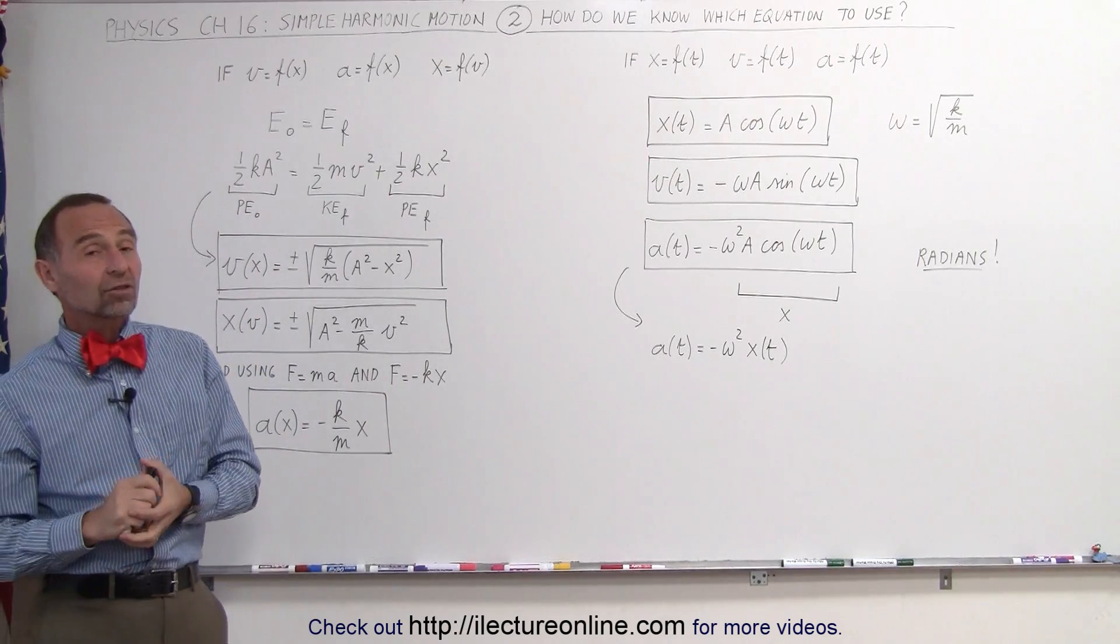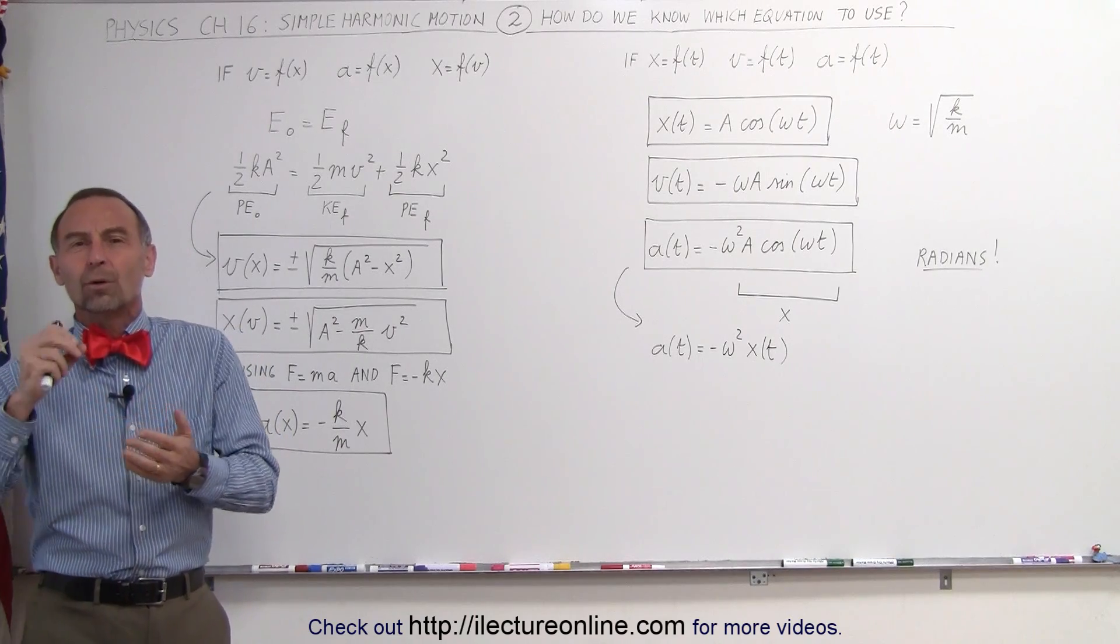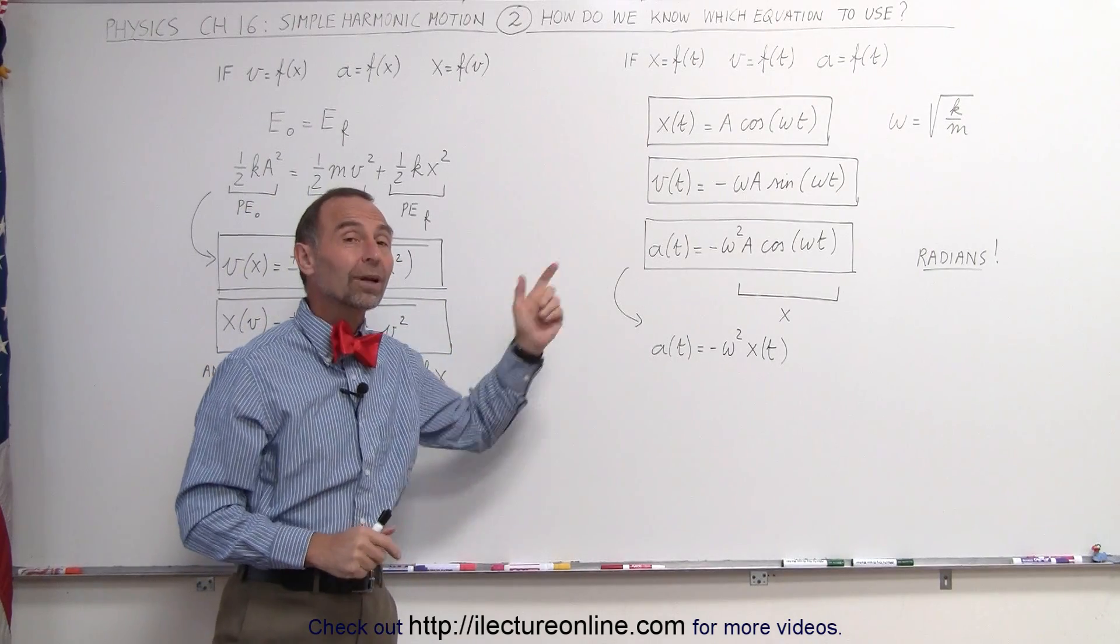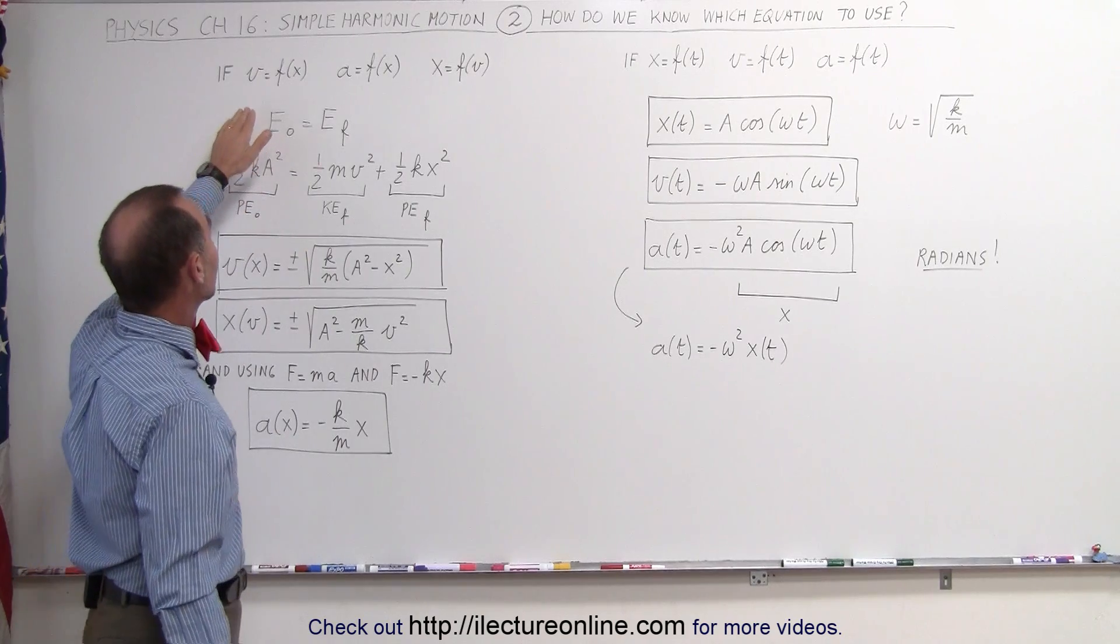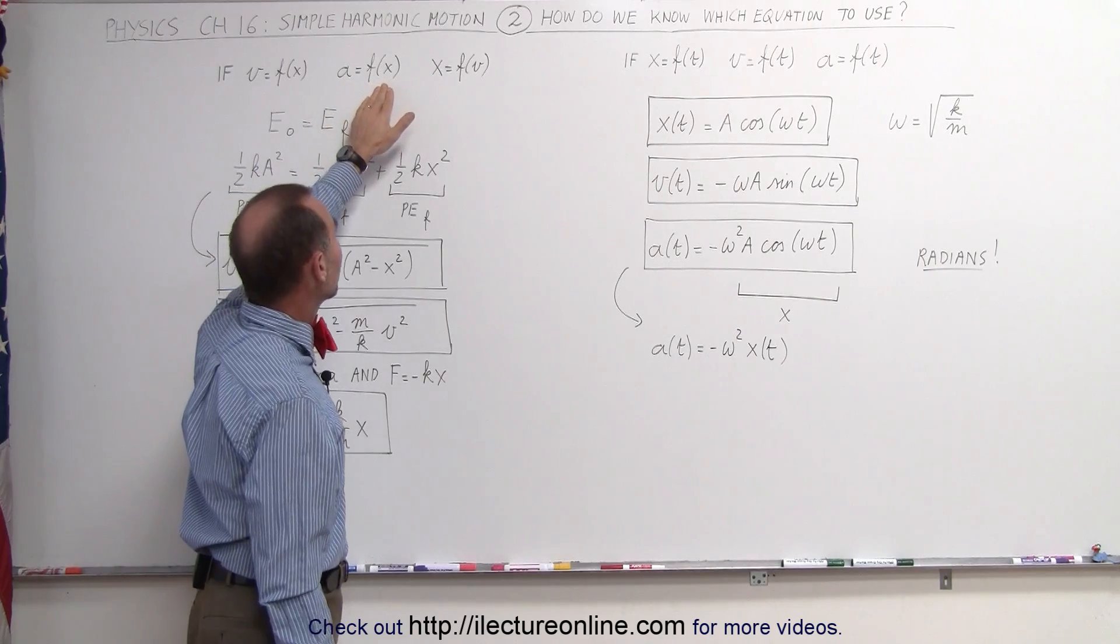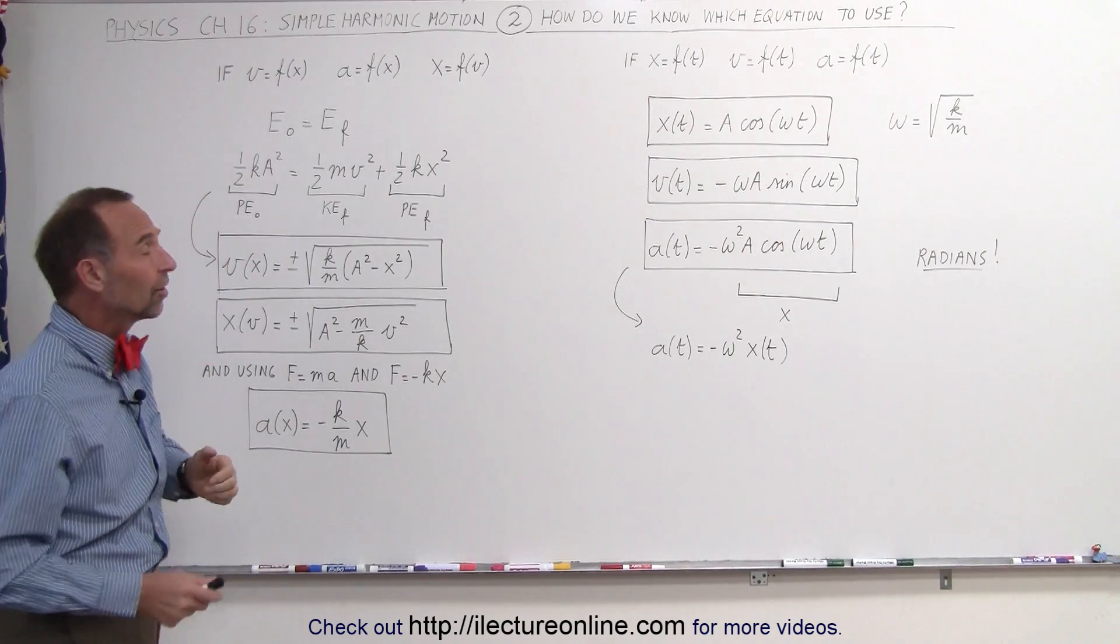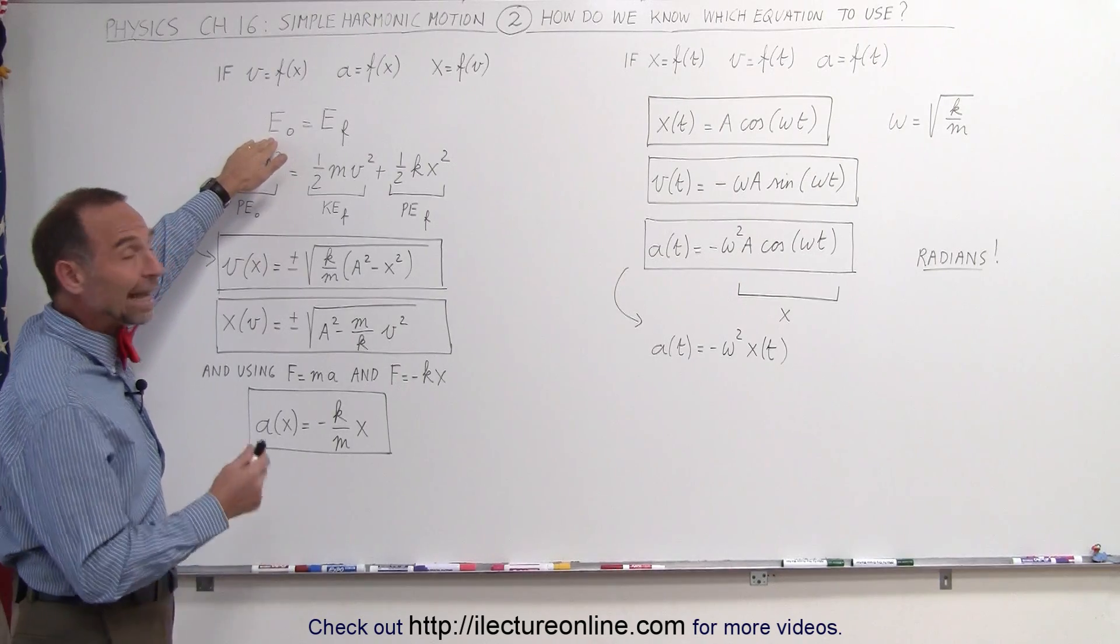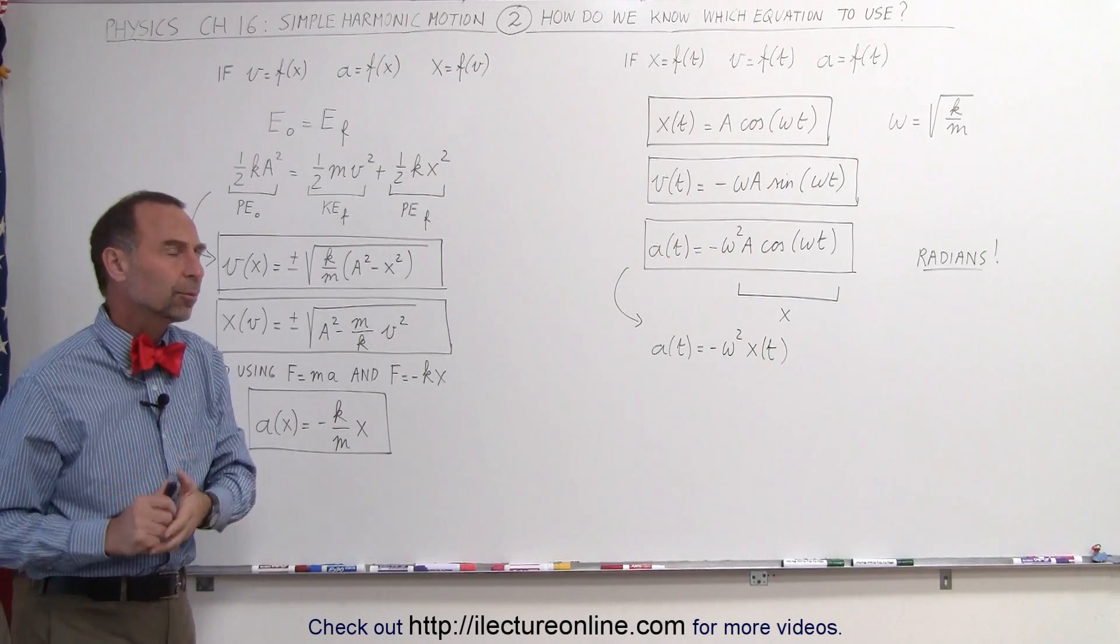But if they ask you the question, what is the position or what is the velocity of the object three seconds after we push the object away from the equilibrium point, then you will need to use something like this, one of these three equations. In other words, what we're saying here is, if you're trying to find the velocity as a function of position, the acceleration as a function of position, or the position as a function of velocity, then we need to use this equation right here, or at least the equation that's in one of the equations that's derived from the concept that the energy initial equals the energy final, or the concept that f equals ma.